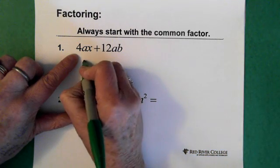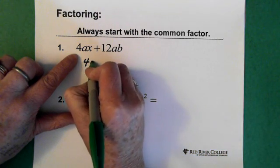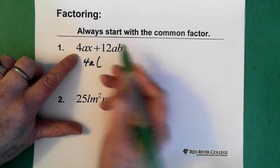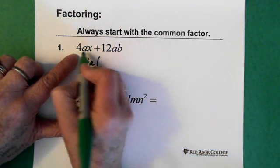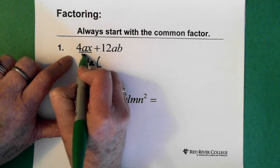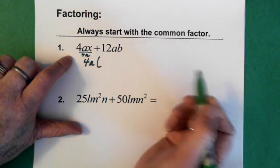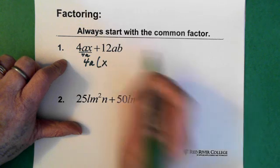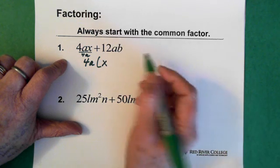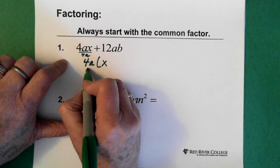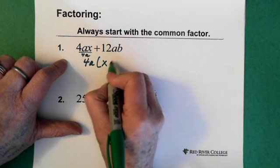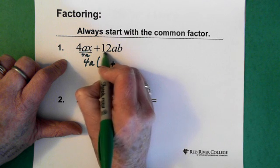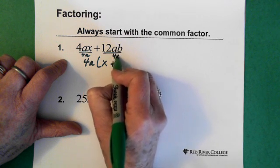So then what we do is we say, alright, I'm going to pull out the 4A. And essentially what you're doing is dividing this piece by 4A, and that leaves you with an X. And you're dividing, since you've pulled out the 4A here, our plus remains.